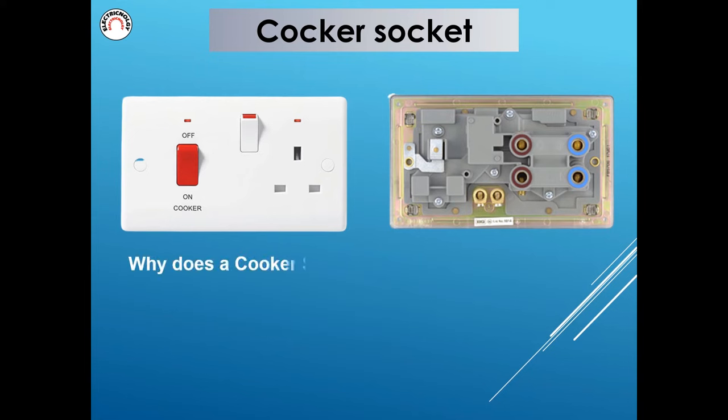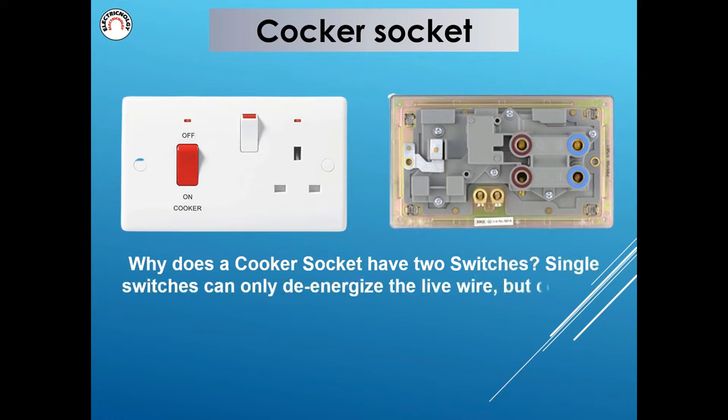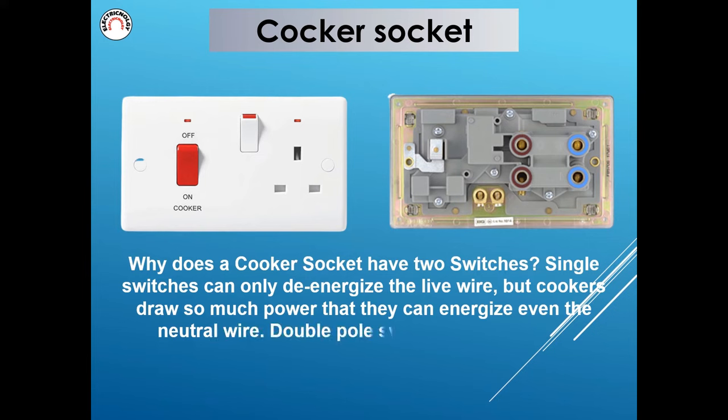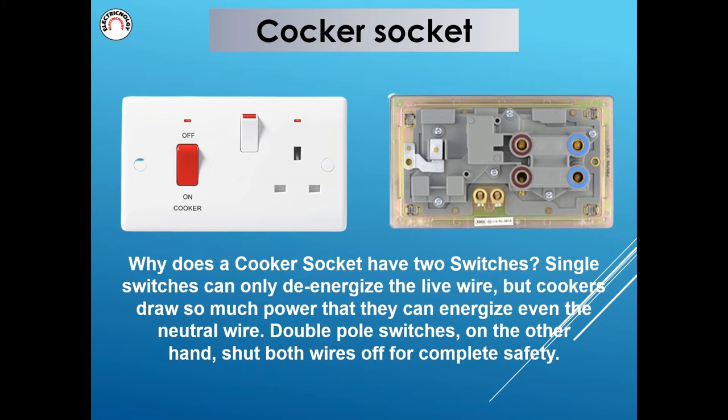Why does a cooker socket have two switches? Single switches can only de-energize the live wire, but cookers draw so much power that they can energize even the neutral wire. Double pole switches, on the other hand, shut both wires off for complete safety.